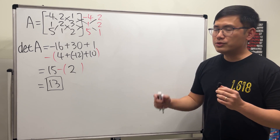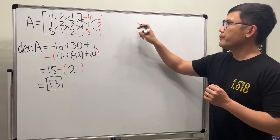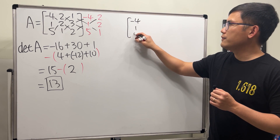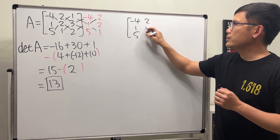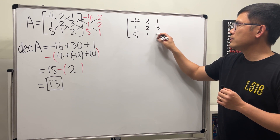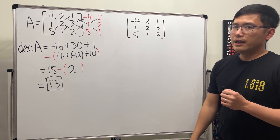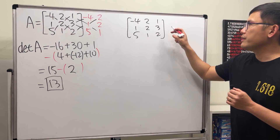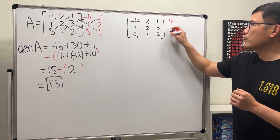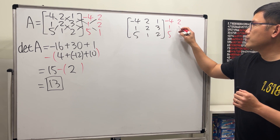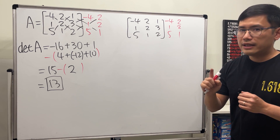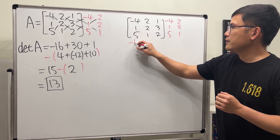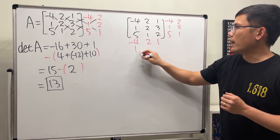To do so, I'm going to write down the matrix right here: negative 4, 1, 5, then 2, 2, 1, then 1, 3, 2. I'm going to copy down the first two columns again: negative 4, 1, 5, 2, 2, 1, and then copy down the first two rows: negative 4, 2, 1, and 1, 2, 3.